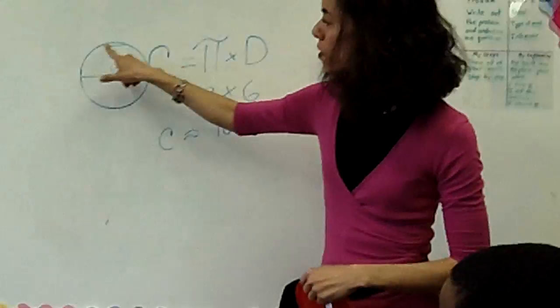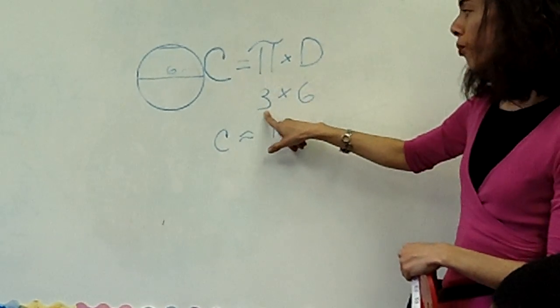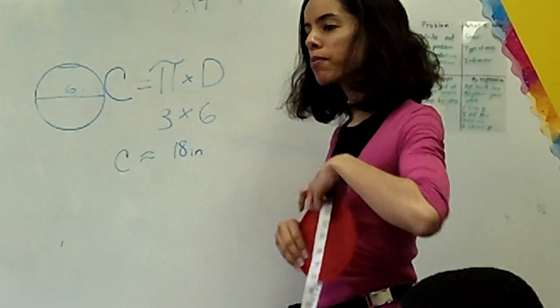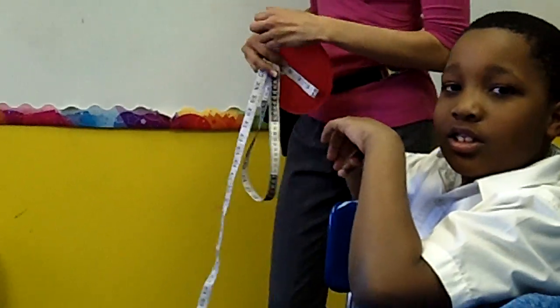So if I want to find the circumference, that's pi times the diameter. Pi is worth three, and diameter, when I measured it, was six. You guys are fabulous. So this was the clue. Now, let me learn it. Thank you very much. Adios! Adios! Alright. Bye. Bye.